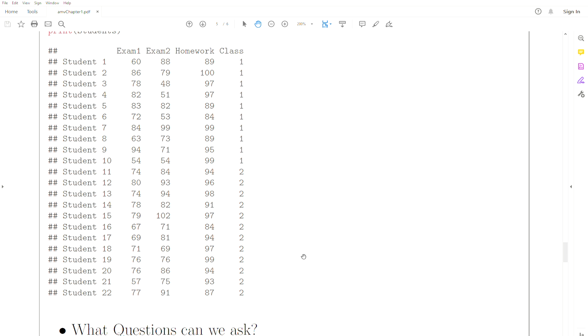What kind of questions can we have? We have to think multivariately. So univariately we would say are exam one scores the same or are they different between the two classes? We're focusing on one response variable.